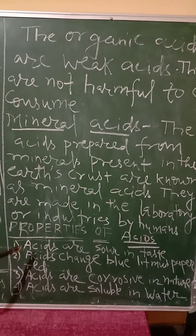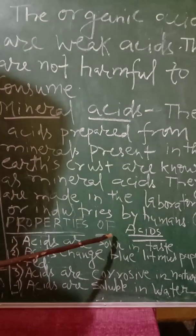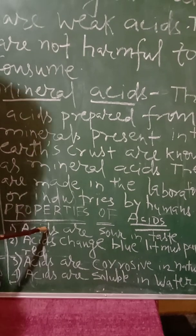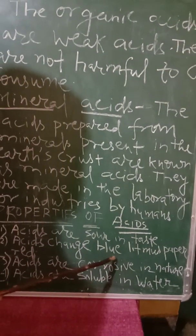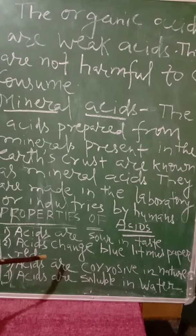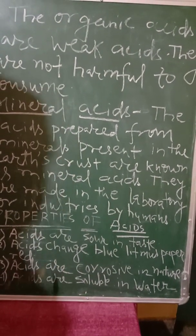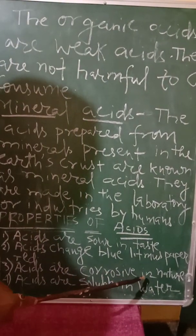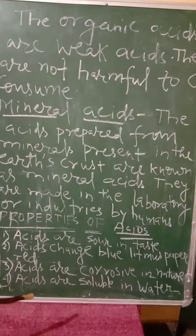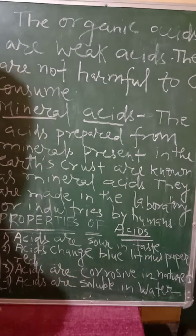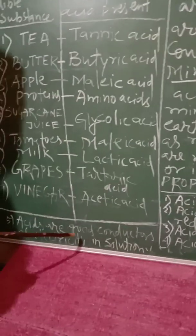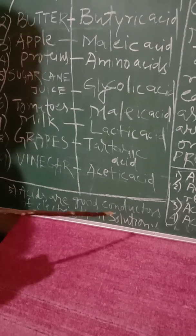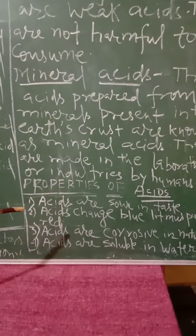Now we come across the properties of acids. Number one: acids are sour in taste. Number two: acids change blue litmus paper to red. Number three: acids are corrosive in nature, so you must use them properly, otherwise it may create a problem. Number four: acids are soluble in water. Number five: acids are good conductors of electricity in solution. These are the properties of acids.